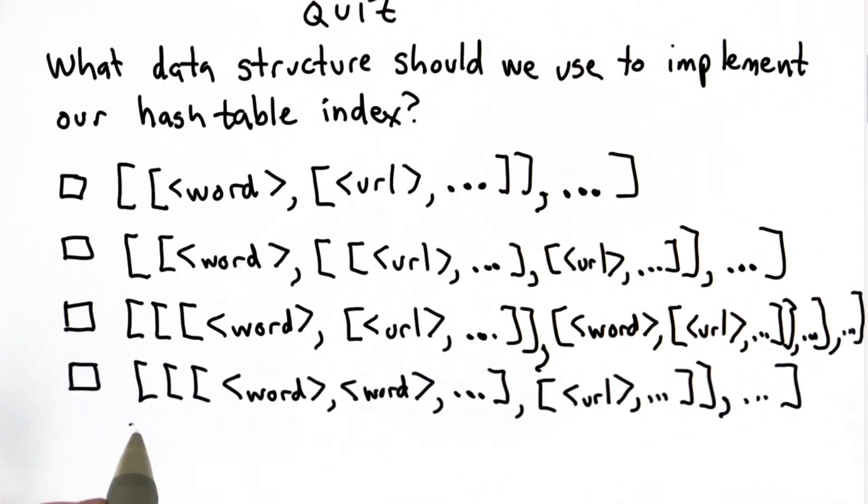For choice 4, we have a list where each element of the list is a list, where within the element list there's another list, which is a list of words followed by a list of URLs.